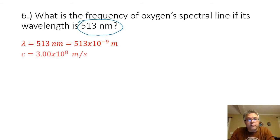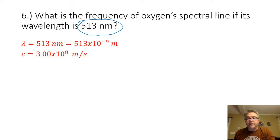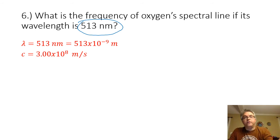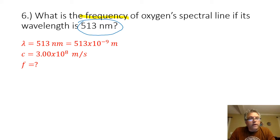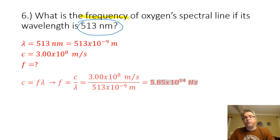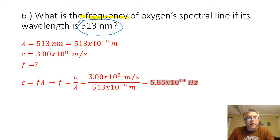The speed of light is 3.00 times 10 to the eighth meters per second, and I am trying to find the frequency. So if I have the wavelength and I have the speed of light, I know I'm going to need to use my wave speed formula for electromagnetic waves, which is C equals frequency times wavelength.